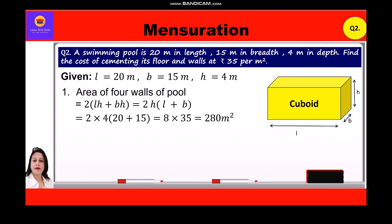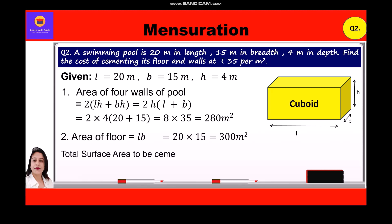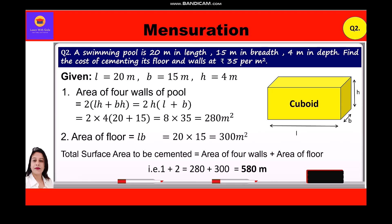Now we shall calculate the area of the floor, which is equal to length × breadth = 20 × 15 = 300 square meters. Total surface area to be cemented = area of 4 walls + area of floor = 280 + 300 = 580 square meters.